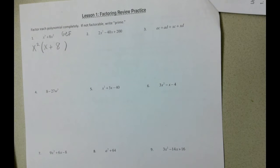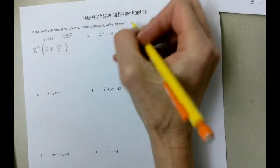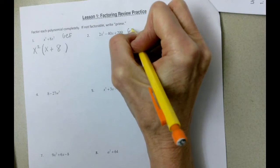And on the second problem, again, we do have a greatest common factor. If you notice, between 2 and 40 and 200, those are all even numbers.